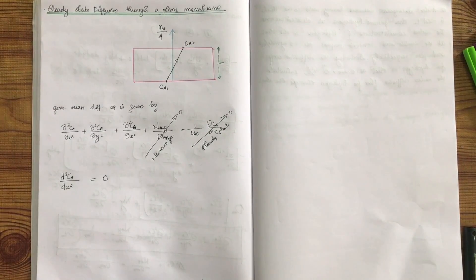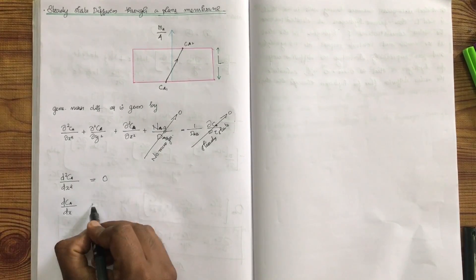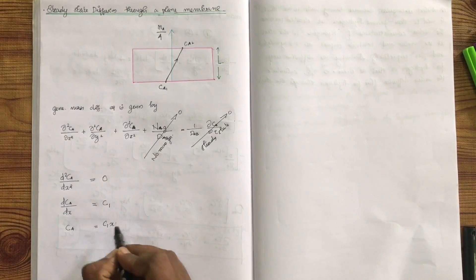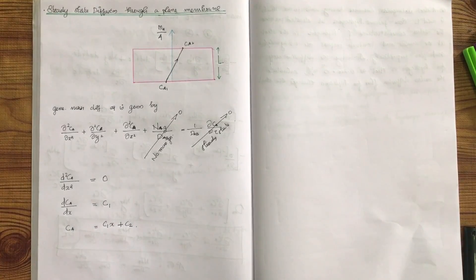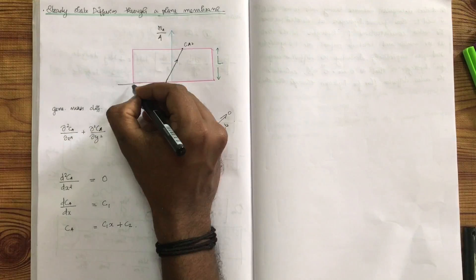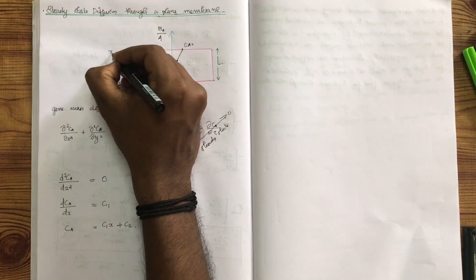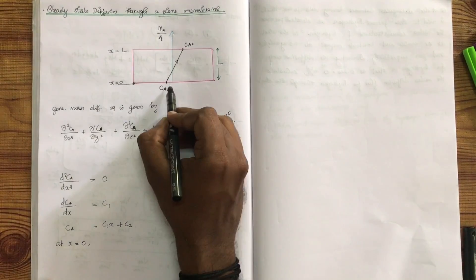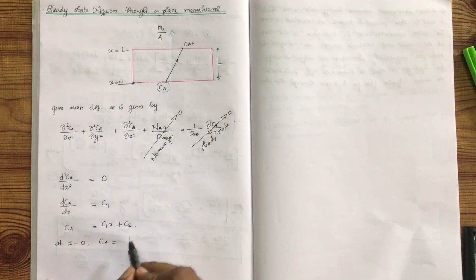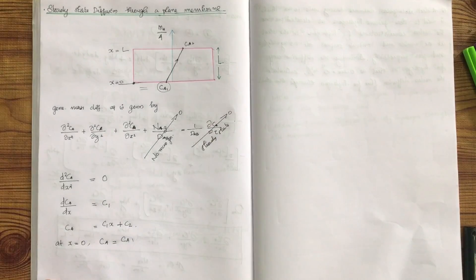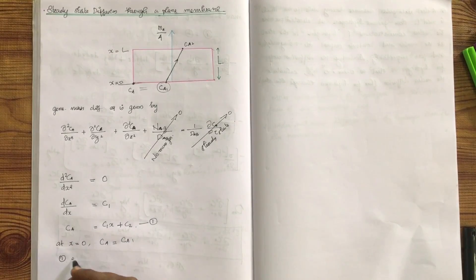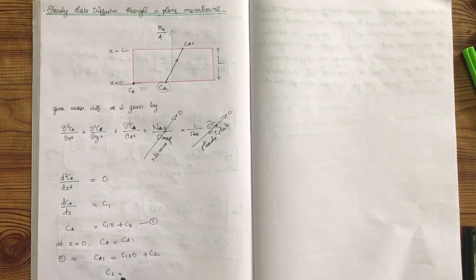Integrating d²cA/dx² = 0 gives dcA/dx = C1. Integrating again gives cA = C1·x + C2. Now applying boundary conditions: at x = 0, cA = cA1. Substituting into the equation gives C2 = cA1.